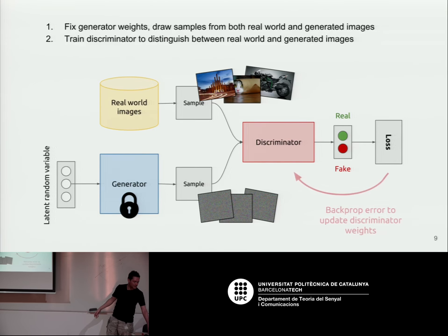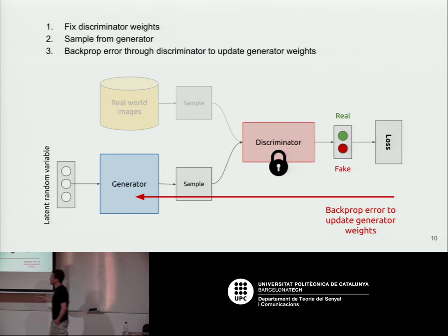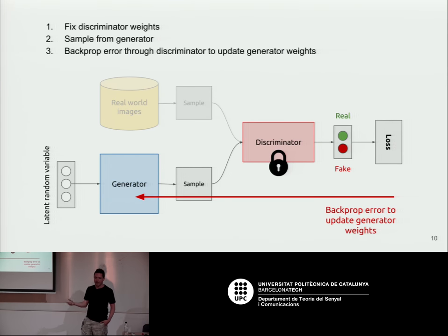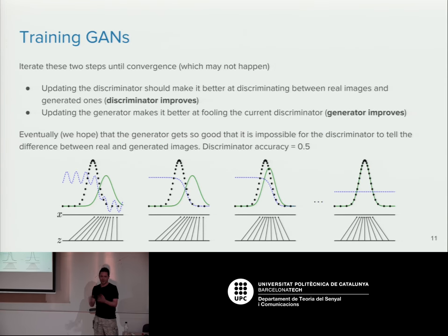You back-propagate to update the discriminator using stochastic gradient descent. Then you fix the discriminator's weights and train the generator alone: draw random Gaussian samples, generate samples, pass them forward through the fixed discriminator, back-propagate the loss through the discriminator without updating its weights, and then update the generator to make it better at fooling the discriminator. Then alternate back and forth — a bit of discriminator training, a bit of generator training — each getting a little better at each stage.